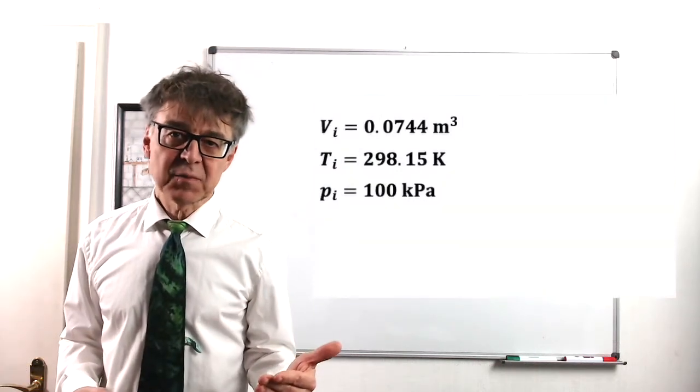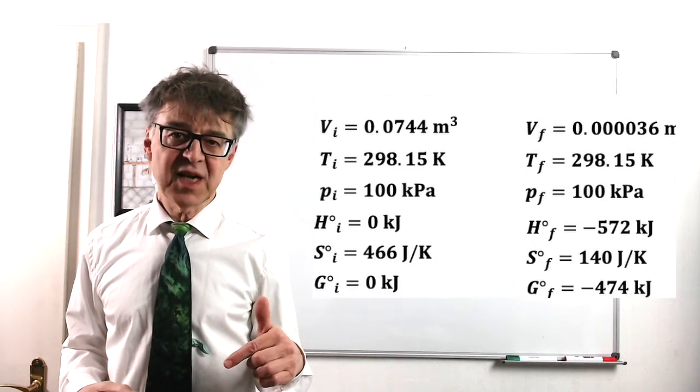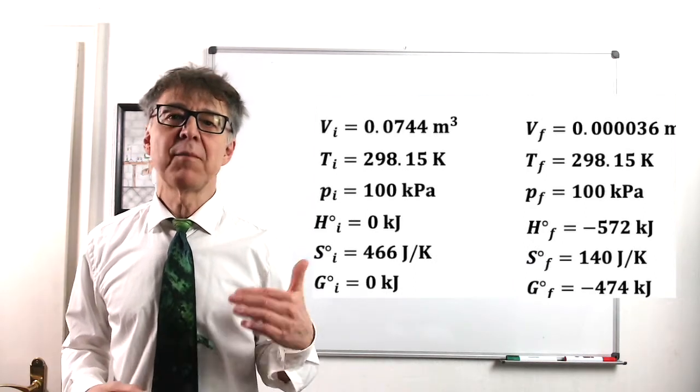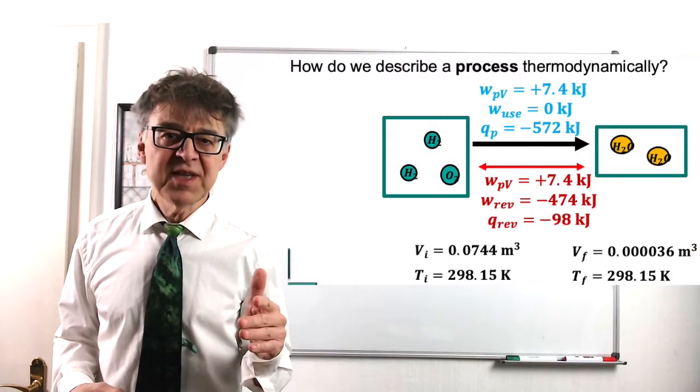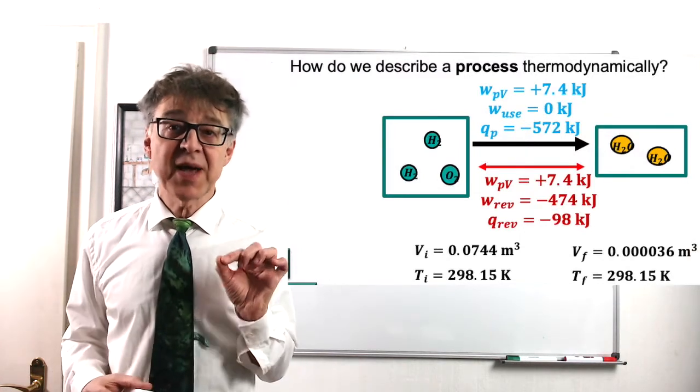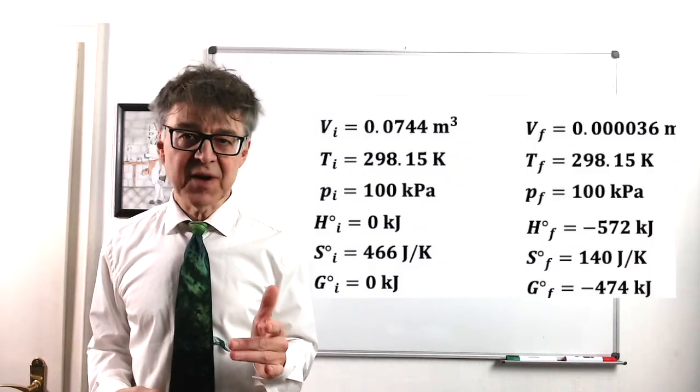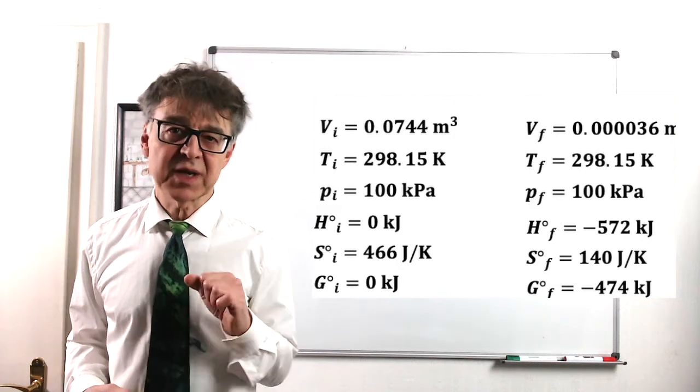Let's scale it all together. We defined the state functions of the initial and final state, and we defined work and heat as path functions. Work and heat are referred to in this way because heat and work actually depend on the path. In contrast, the state functions are always the same, no matter what path we go.